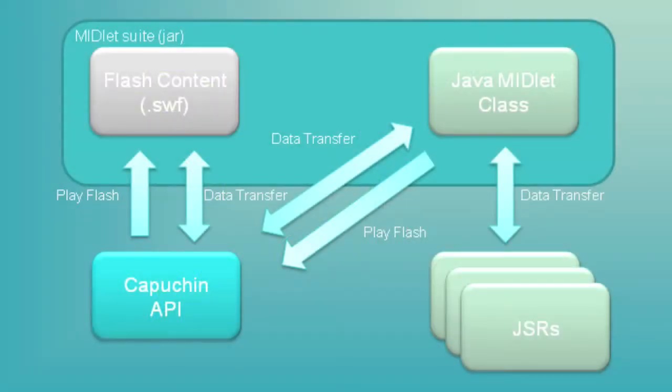So the short definition of Project Capuchin is an API that is bridging Flashlight and Java ME, meaning that you get the best of both worlds from those two technologies.